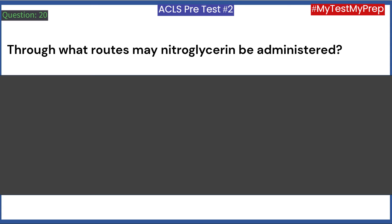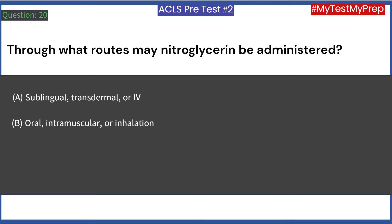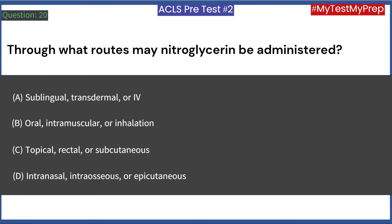Through what routes may nitroglycerin be administered? A. Sublingual, transdermal, or IV. B. Oral, intramuscular, or inhalation. C. Topical, rectal, or subcutaneous. D. Intranasal, intraosseous, or epicutaneous. Answer: A. Sublingual, transdermal, or IV.